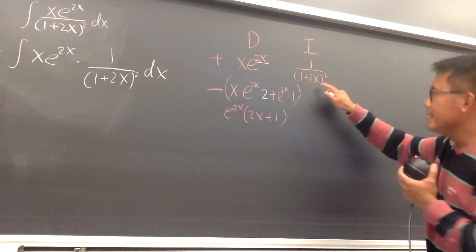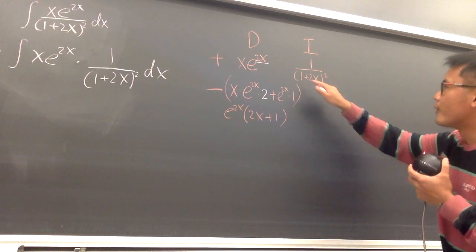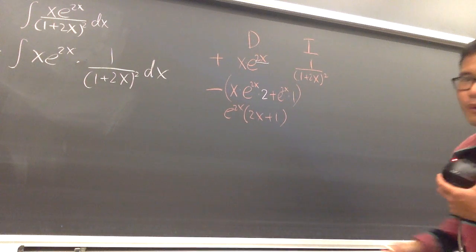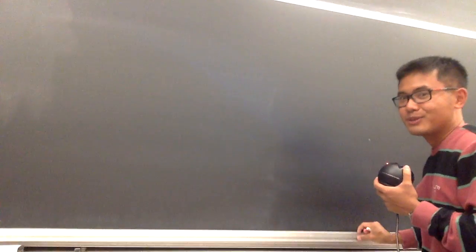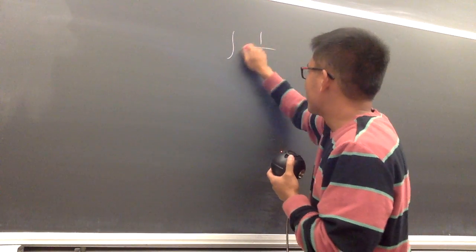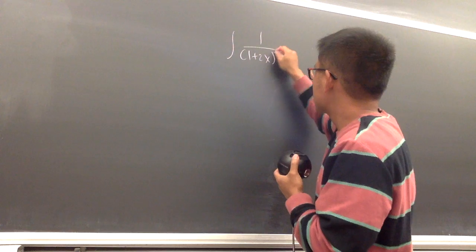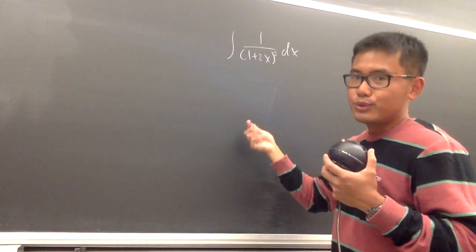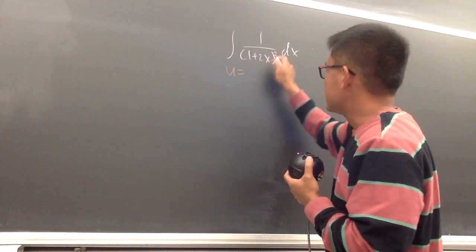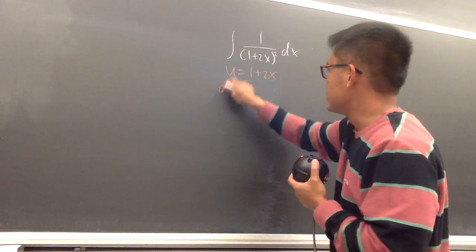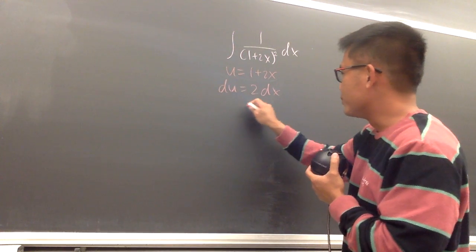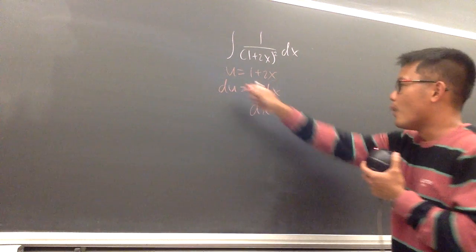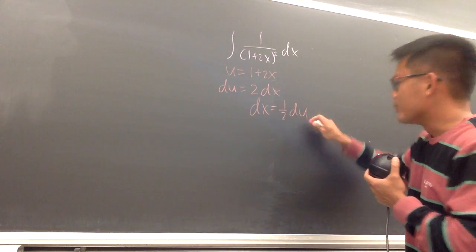Now let's integrate 1 over 1 plus 2x to the second power. Let me use another board and show you the u-substitution quickly. Let's integrate 1 over parentheses 1 plus 2x squared dx. We do u-sub: let u equal the inside, which is 1 plus 2x, so du equals 2 dx, and therefore dx equals 1 half du.